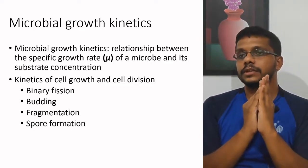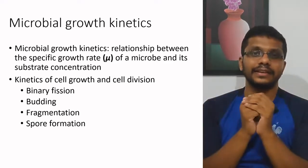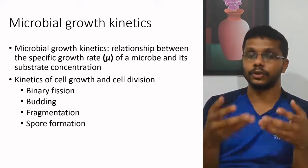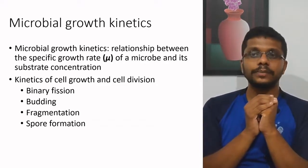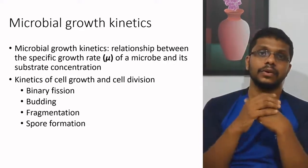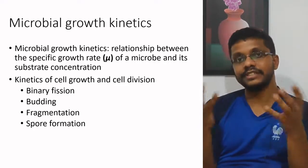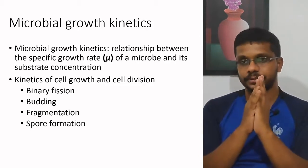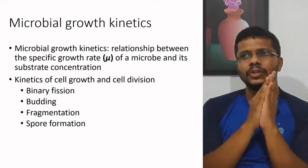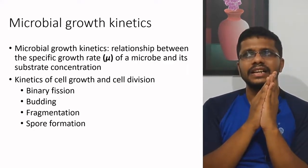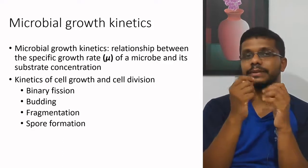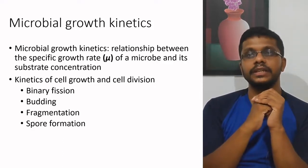When we think about growth kinetics, microbial growth is not just like a chemical reaction — it is more complicated. Several thousands of reactions are happening in a microorganism before growth and division. Microbial growth has two different components: one is cell growth, which is the increasing size of the microorganism, and second is cell division, the division of a cell into two daughter cells. Cell growth means growing in size, and cell division means growing in numbers. Cell division is more important than cell growth because the potential for size growth is very limited, but cell growth also contributes to growth kinetics.